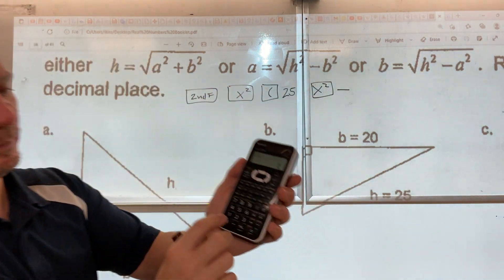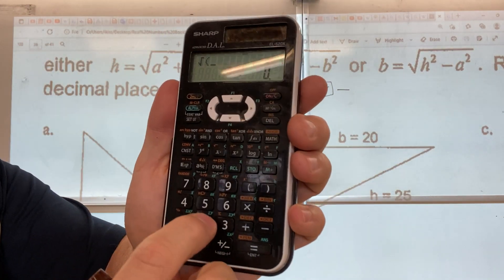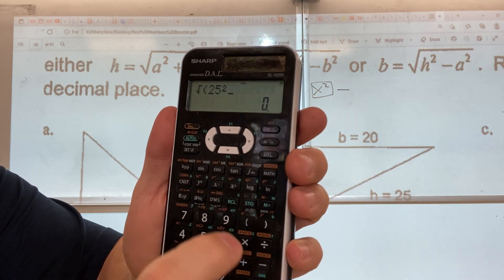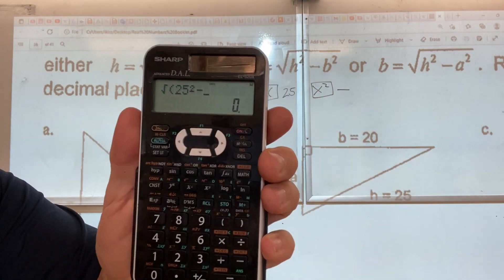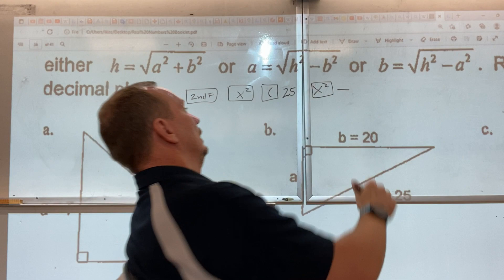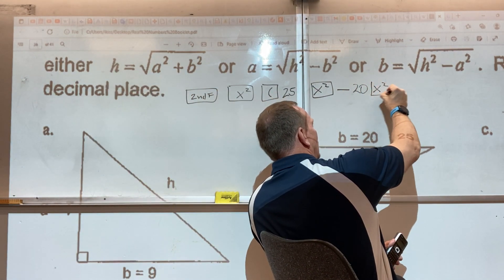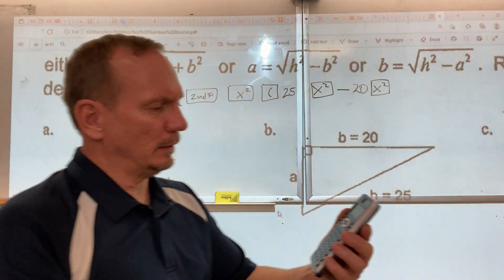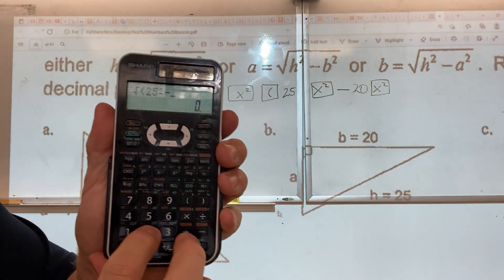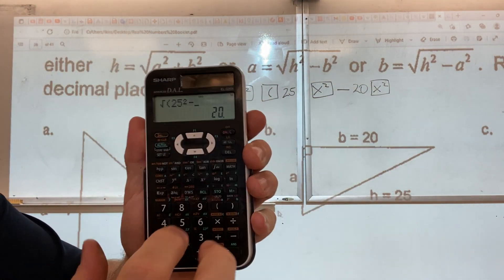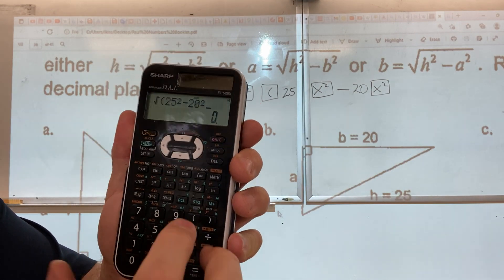25 and square root minus. So I'm going 25 squared minus. Enter 20 and press the X² button. So that's looking like 20 and the X² button without a second function.